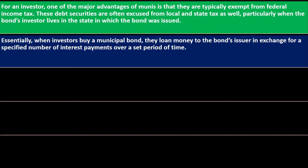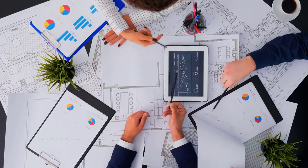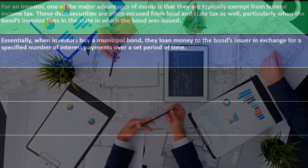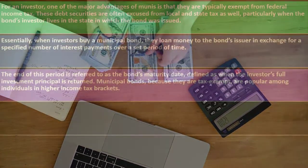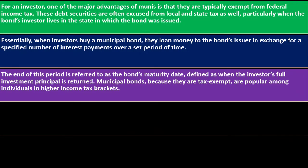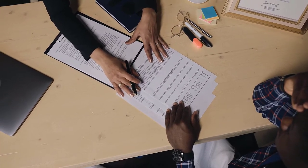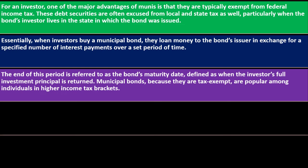When investors buy a municipal bond, they loan money to the bond's issuer in exchange for a specified number of interest payments over a set period of time — similar to a promissory note. Just like renting an apartment, you pay for the use of it. If the government is renting our purchasing power, they pay rent in the form of the agreed interest. The end of this period is referred to as the bond's maturity date, at which point the investor's full investment principal is returned.